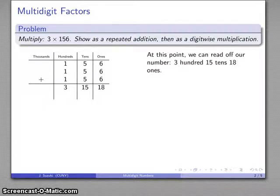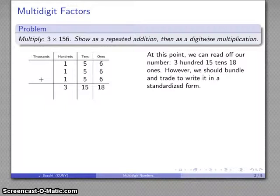Although we might want to rewrite that in standard form, we need to then bundle and trade. And again, since this is base 10, we know that we can bundle 10 and trade for 1 in the next place over. So that 18 becomes an 8 and a 10, and I trade, and that makes 16. The 16 is 6 and 10, and I bundle the 10, and I trade, and combine, and there my final answer, four hundreds, six tens, eight ones, 468.